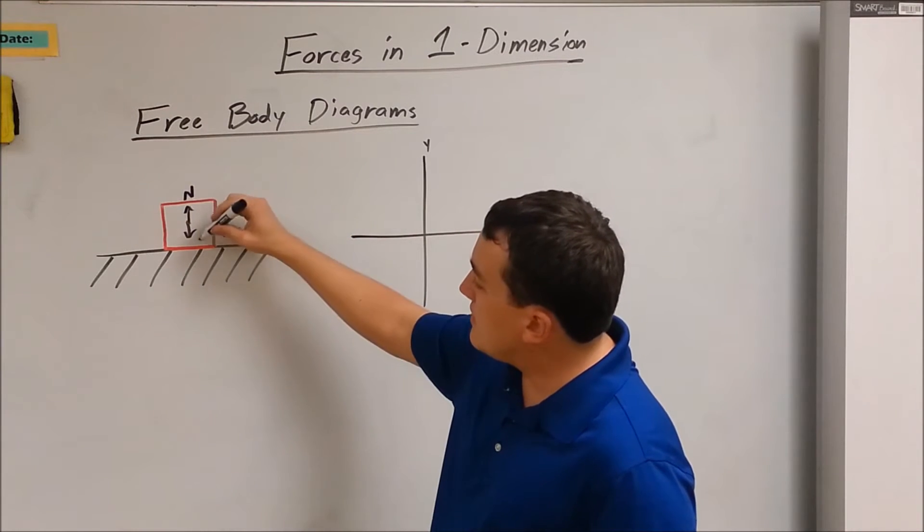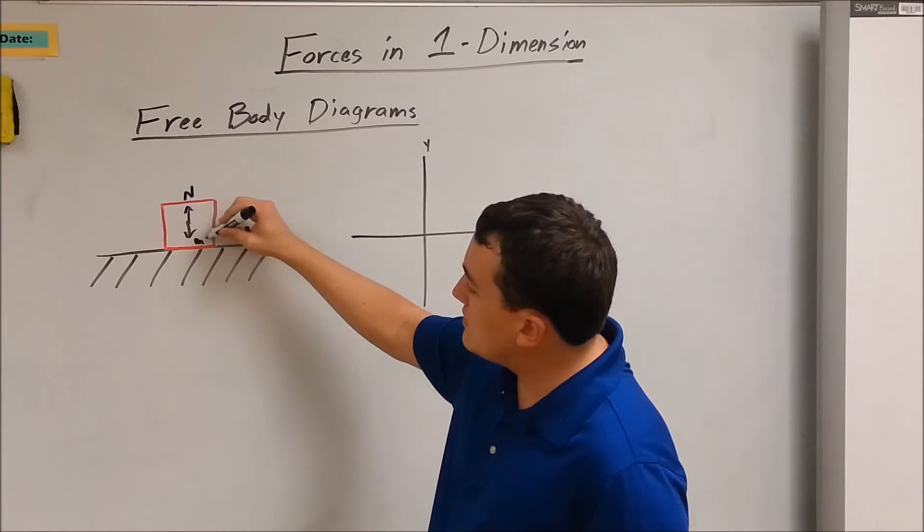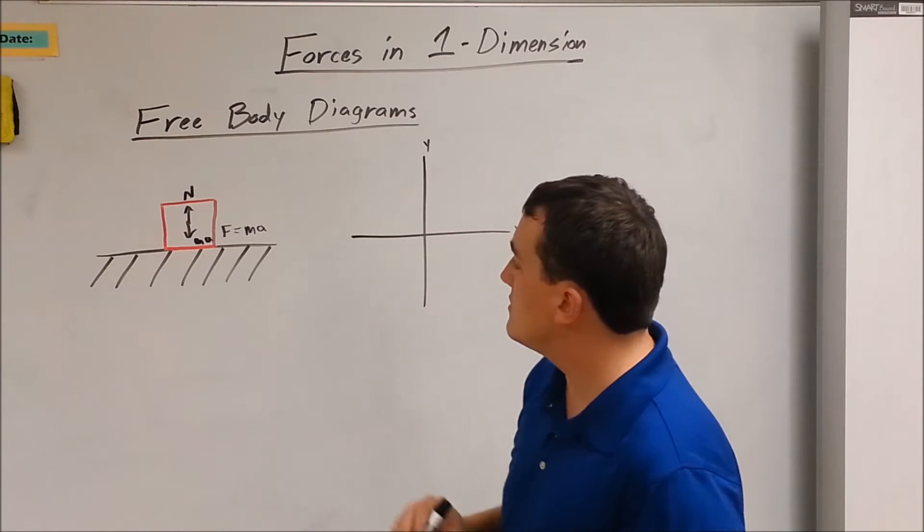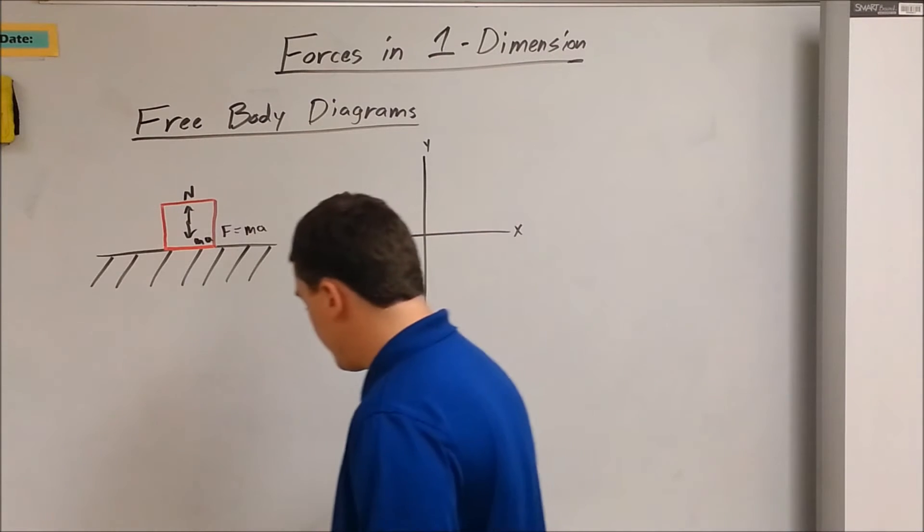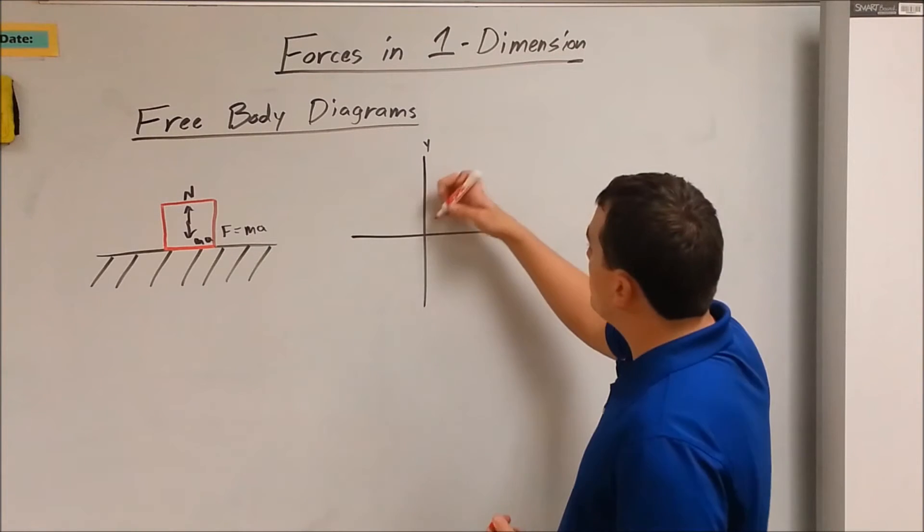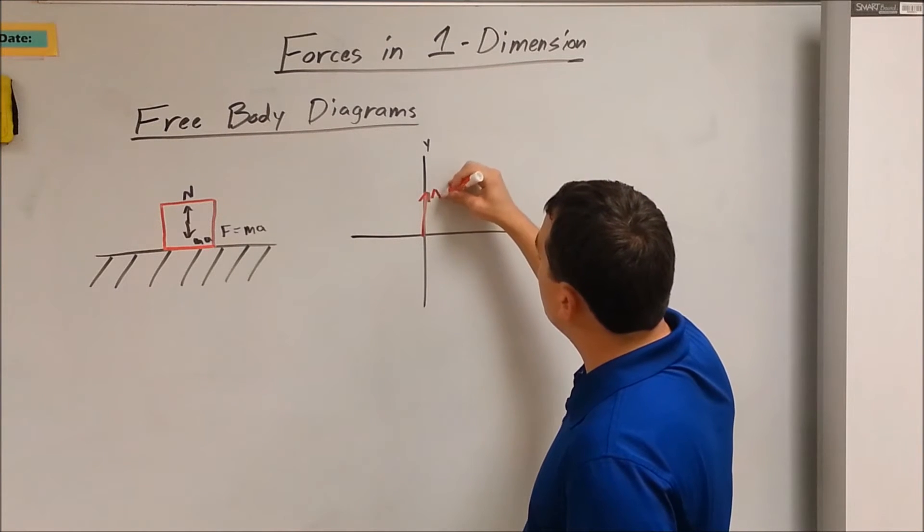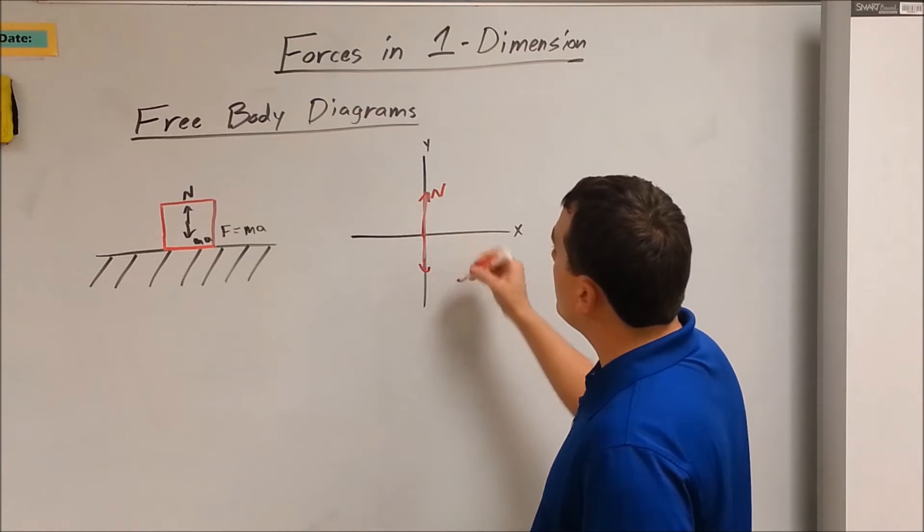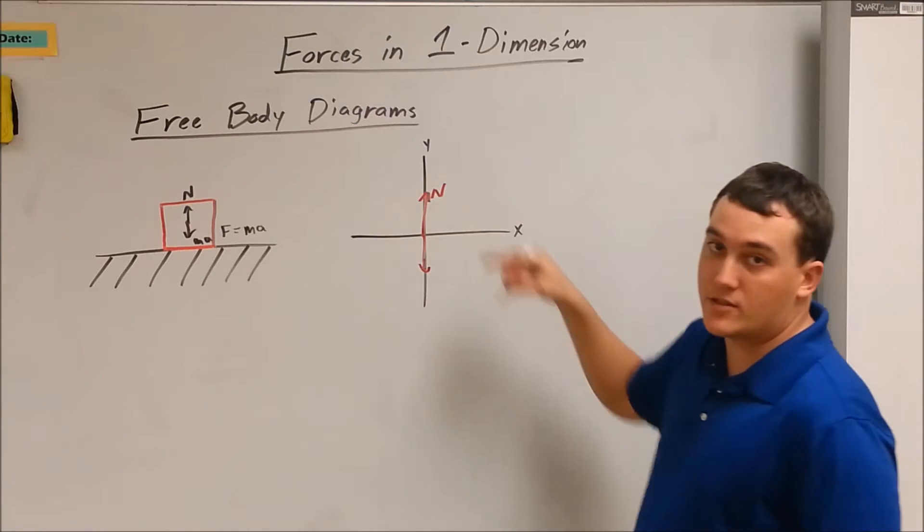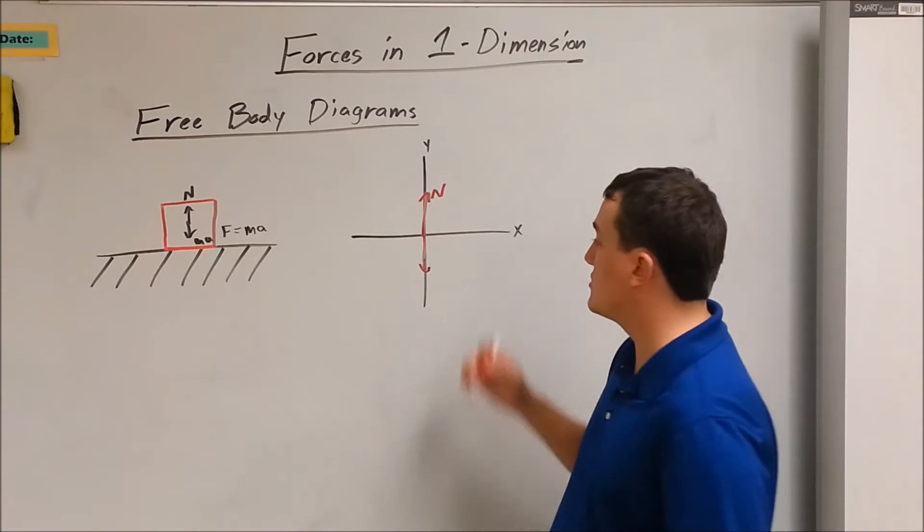So that's N and that is MA. So when we represent it here, we're just going to have the normal force N, and then the force of gravity pulling down. These are the exact same vector, just opposite in direction.